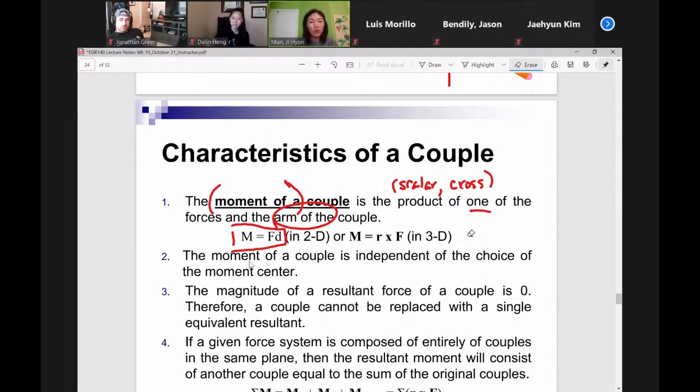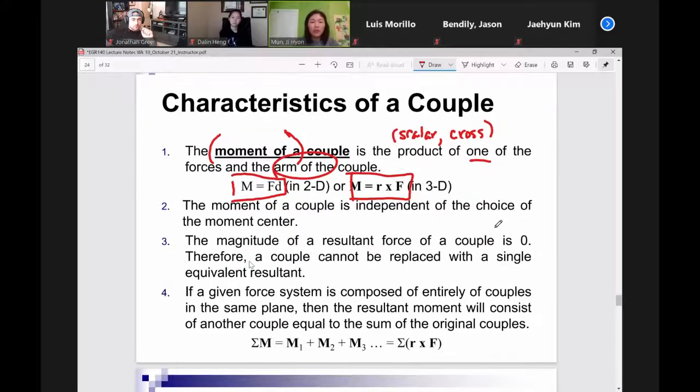So going back to the characteristic, you can find the moment of a couple by just taking the magnitude of one force and multiplying it to the arm of the couple in 2D. In 3D, look at this formula here. It's the same formula that we just used today in analyzing moments in 3D. It's still R cross with F. Again, taking just one of the two forces in a couple and crossing it with a position, a distance between the two, okay? And again, I'll show you all these examples.